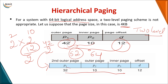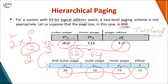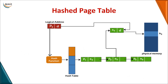In three-level paging, the first outer table contains 32 bits, the second outer table contains 10 bits, the inner table follows, and finally the displacement. Depending on the logical address scheme and page size, you decide whether to use two-level or three-level paging. This is hierarchical or multi-level paging.